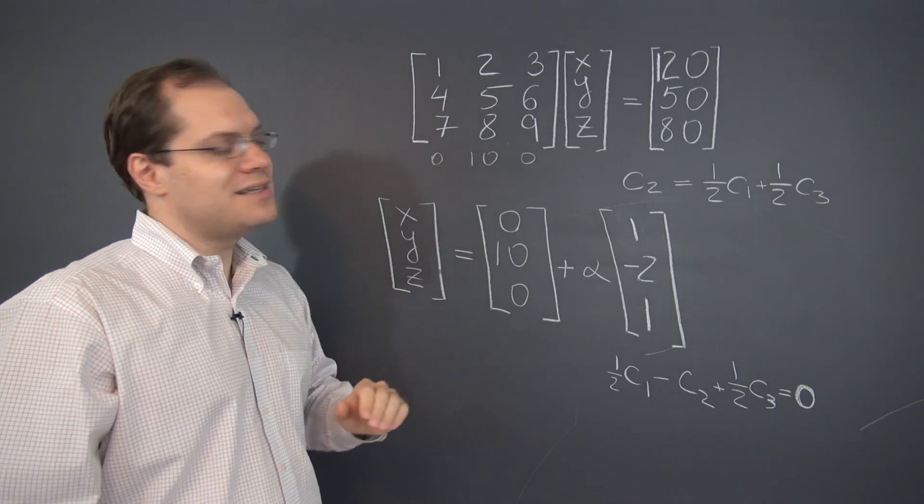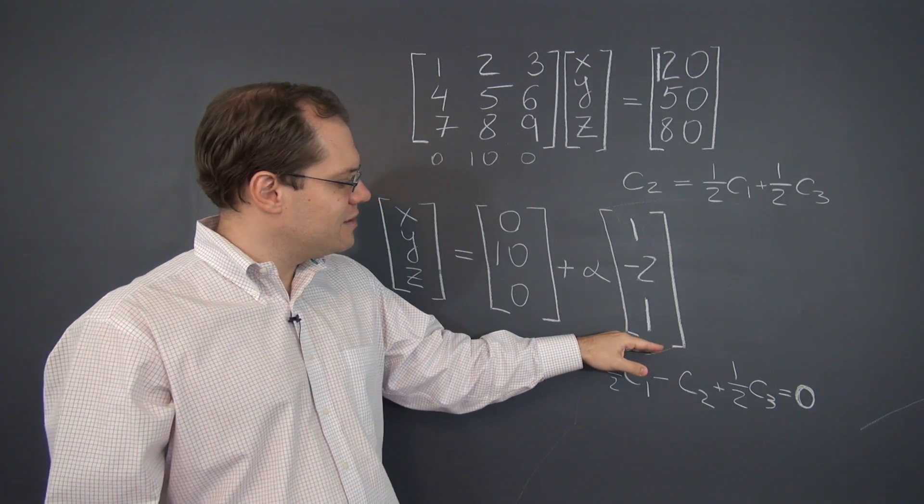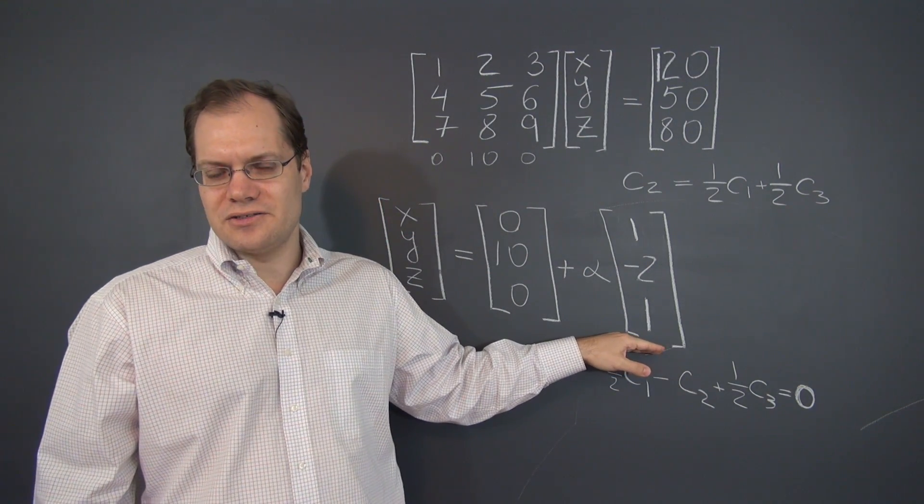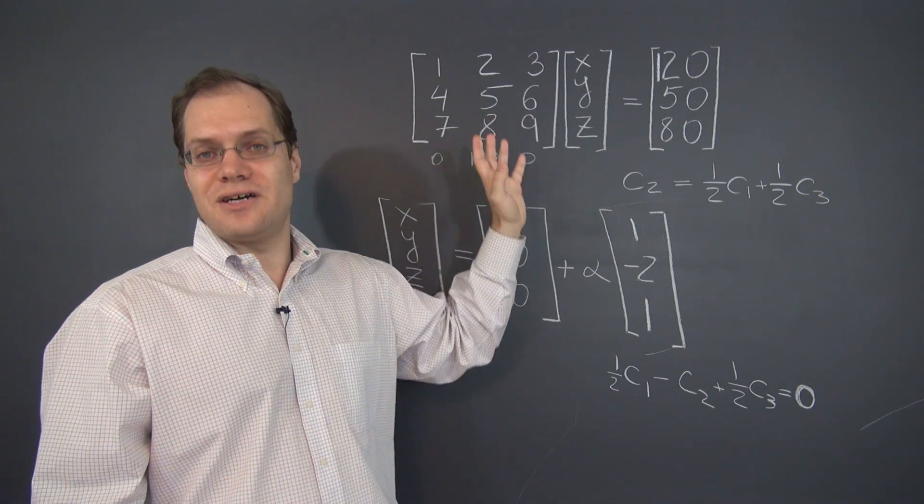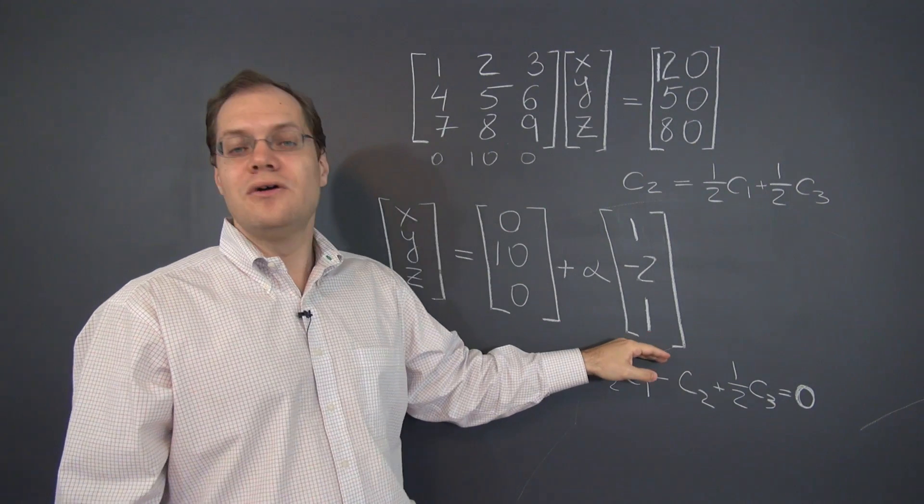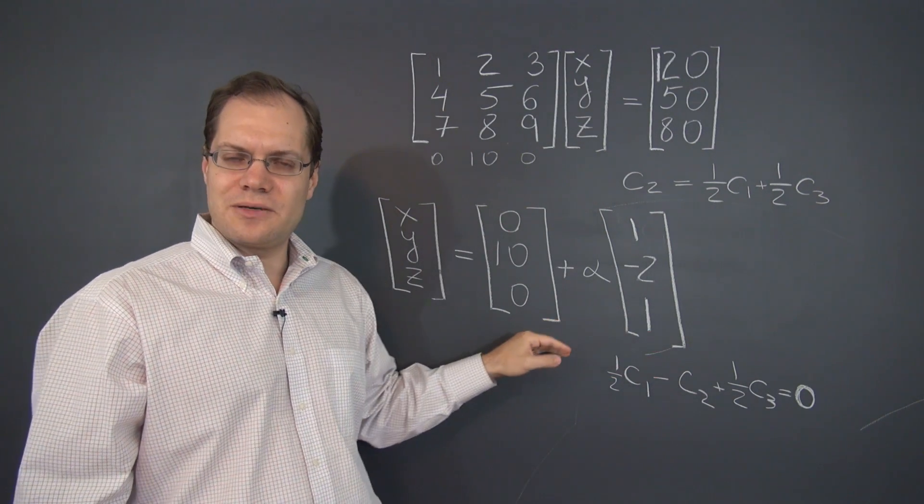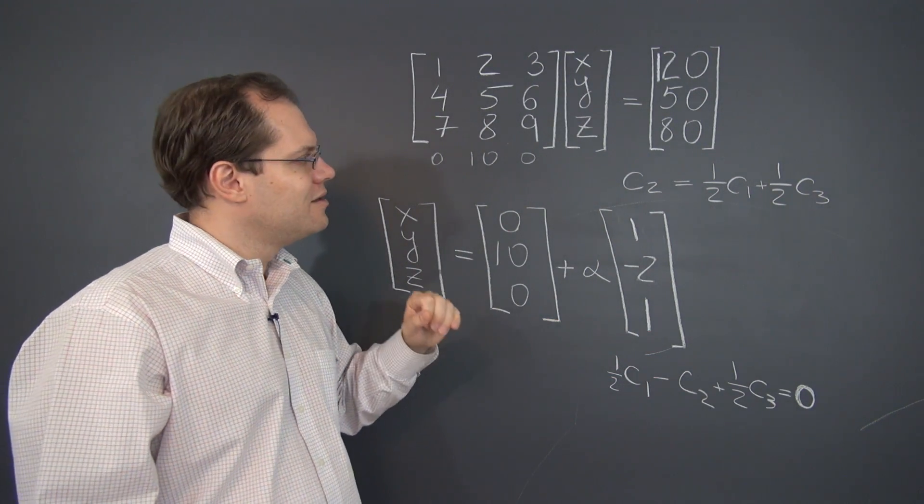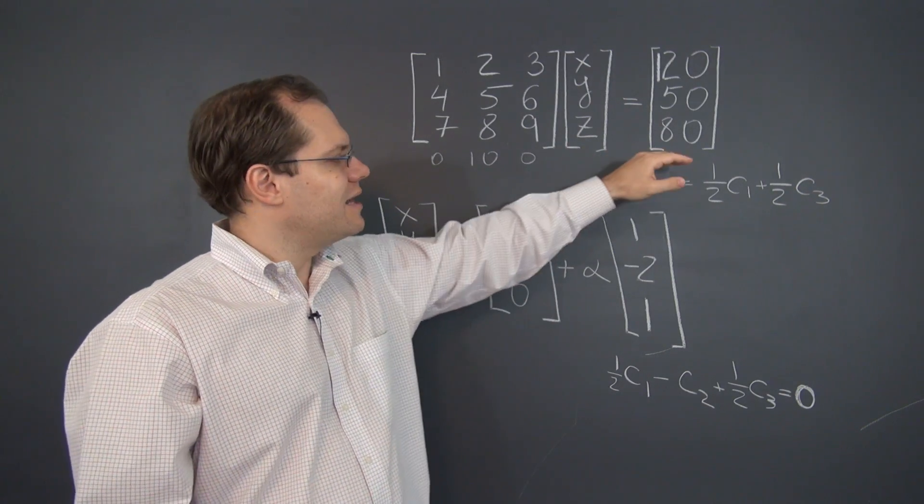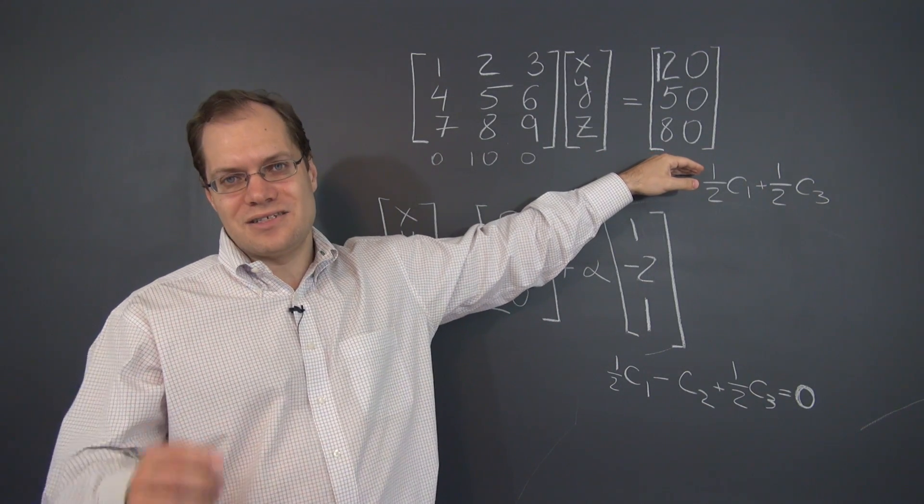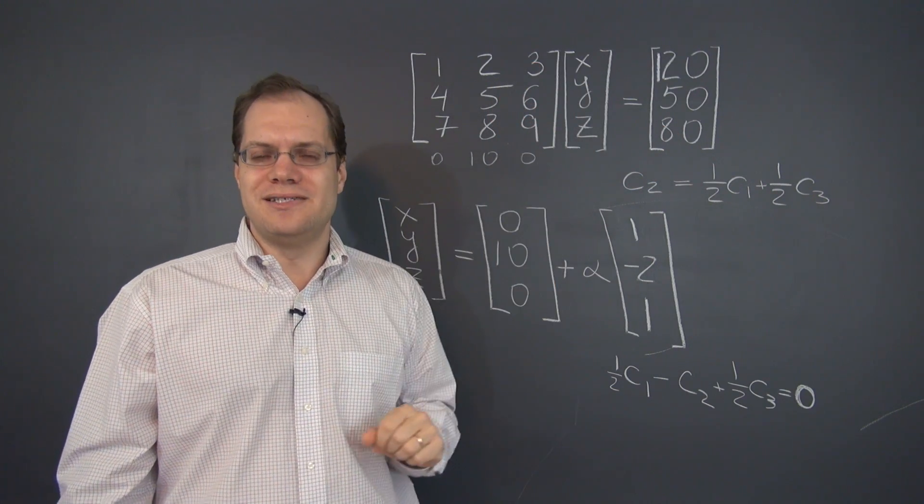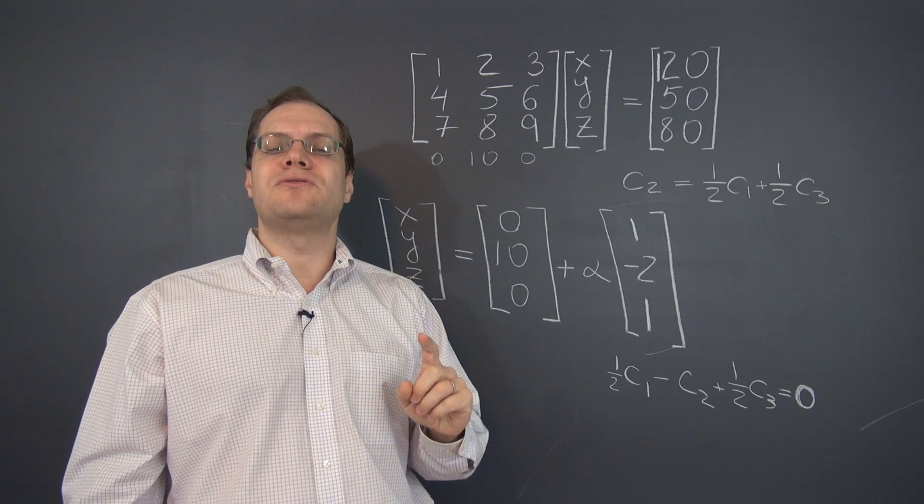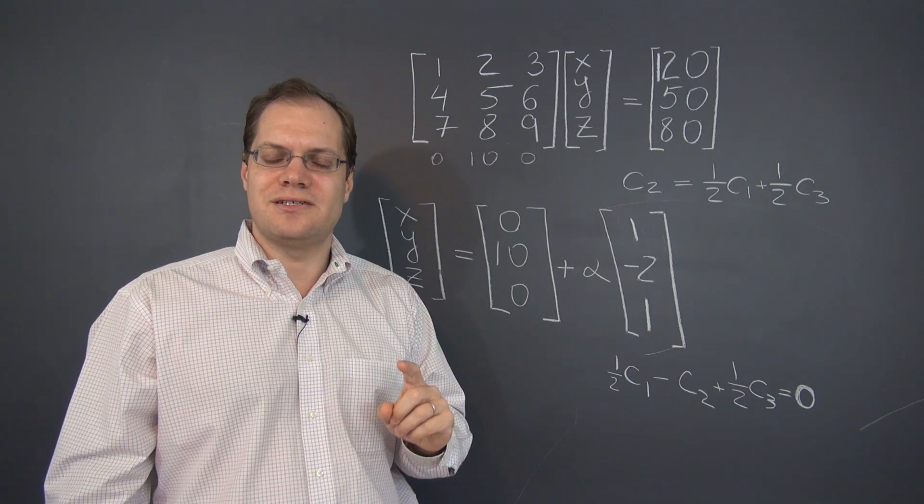So the first thing that we would observe is that the null space is of course unchanged. We didn't touch the columns of the matrix. We didn't touch the left hand side. So the column space is unchanged. What about a particular solution? Well, the obvious thing is that at the very least it's not easy to find. But the problem is deeper than that. It's actually not possible to solve the system.